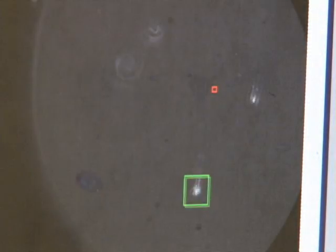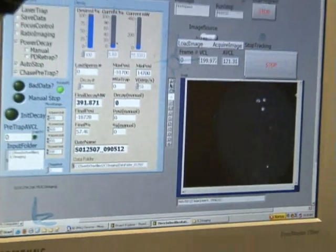The computer keeps moving it to the right location so we can keep tracking it. Now it's going to try and trap it, and that's the trap location. There, now it's in the trap. You can see the power is decreasing, and the sperm was so strong it was able to escape at a very high power of 391 milliwatts. And we're still tracking it and still calculating the velocity.